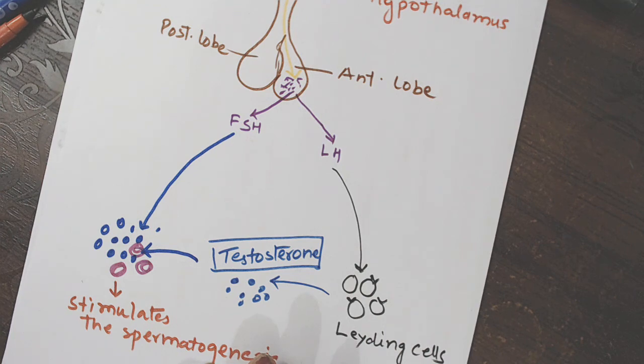Androgen binding protein. Yaani ki ABP ka secretion hoga in the lumen of seminiferous tubule. Getting? And it binds to testosterone and keeps its concentration high.